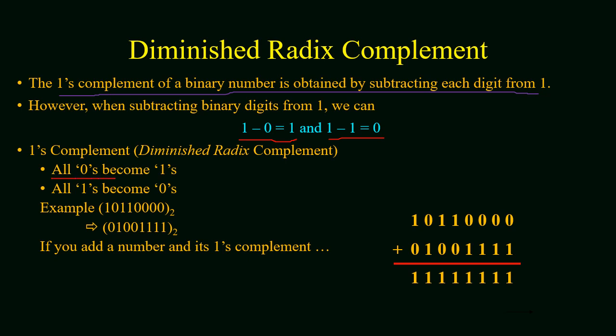For example, we have a number 10110000 and we wish to find its 1's complement. For this we will replace all 0's with 1 and all 1's with 0's. The 1's complement will be 01001111. If you add a number with its complement you will get all 1's.